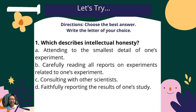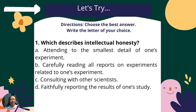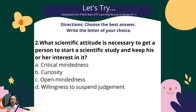For the evaluation, write only the letter of the correct answer. Number one: which describes intellectual honesty? A — attending to the smallest detail of one's experiment; B — carefully reading all reports on experiments related to one's experiment; C — consulting with other scientists; D — faithfully reporting the results of one's study. Number two: what scientific attitude is necessary to get a person to start a scientific study and keep his interest in it? A — critical mindedness; B — curiosity; C — open-mindedness; D — willingness to suspend judgment.